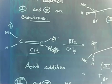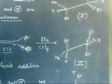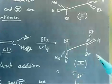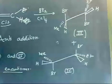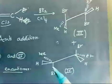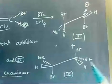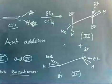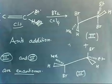Let us go for the problem. If we add bromine, we have two possibilities: either you add from the top and another from the bottom — you will get this compound. If you add the other one from the bottom, you will get this compound. Again these two are basically enantiomers to each other — three and four are enantiomers to each other.